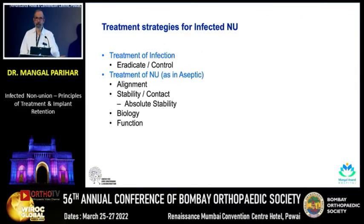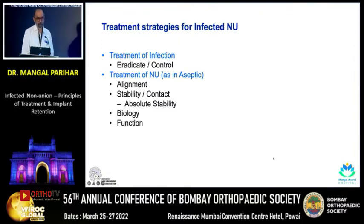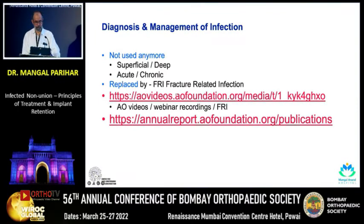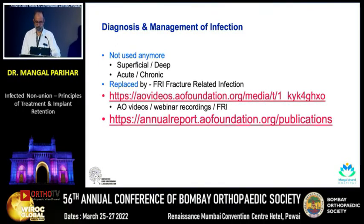There are two parts to it. One is the treatment of the infection — and I always say, even if you can convert an infected nonunion to a nonunion, that is a partial success and not a failure. For nonunion, you need all the concepts we talk about: alignment, stability, biology, and function. We don't talk of superficial versus deep infection or acute versus chronic infection. It is now called FRI — fracture related infection — and on the AO site you have webinar recordings of very good webinars on that, as well as the annual report of the AO Foundation.